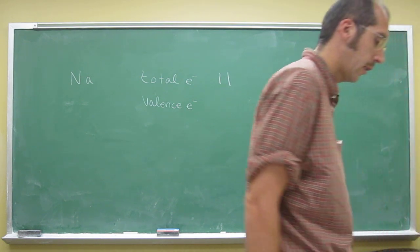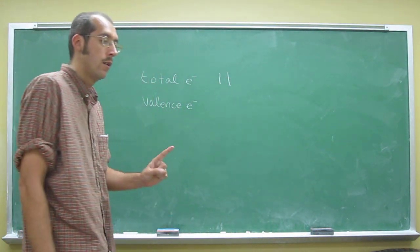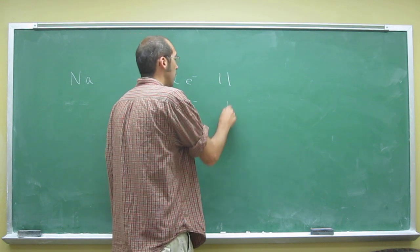So the period three, right? So that 3s electron, there's only one. So number of valence electrons is one.